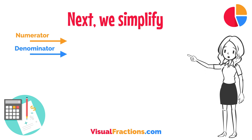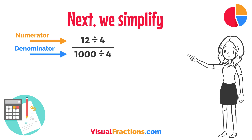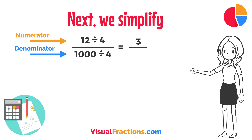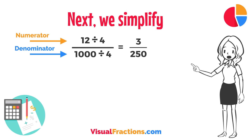Next, we simplify. Both the numerator and the denominator in 12/1,000 can be divided by 4, the greatest common divisor. Divide 12 by 4 to get 3, and divide 1,000 by 4 to get 250. So, 12/1,000 simplifies neatly to 3 over 250.